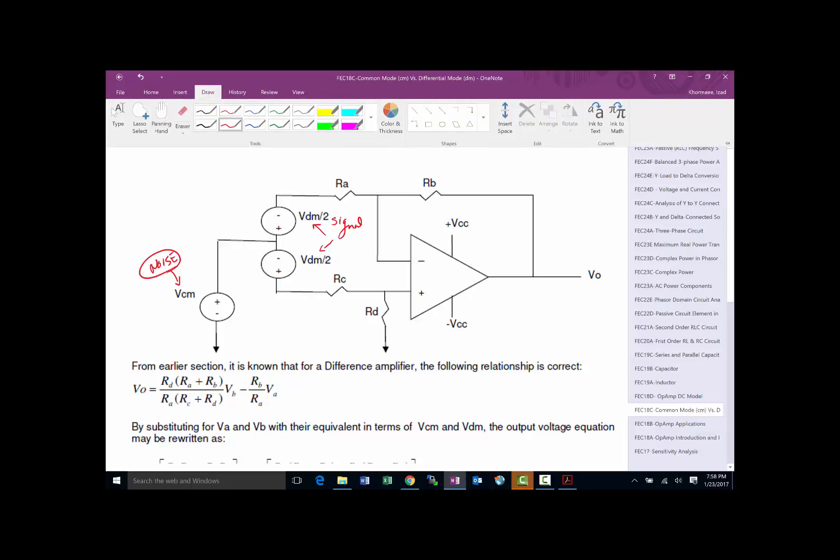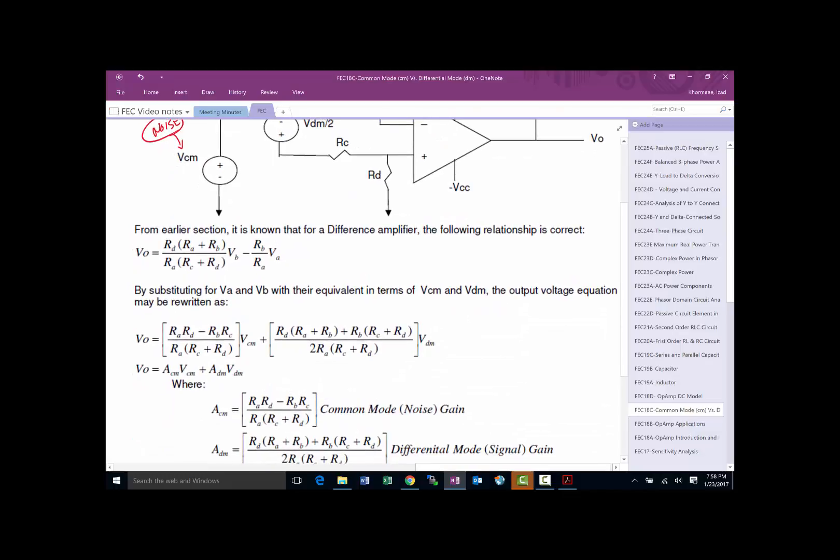By substituting what we had for VA and VB in terms of VCM and VDM, this equation can be rewritten in terms of VCM and VDM. This is the signal we want to maximize, and this is the noise we want to minimize.